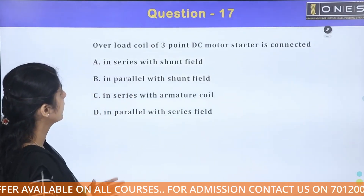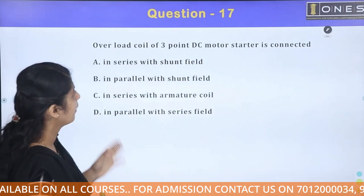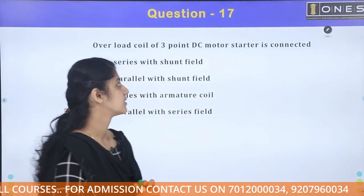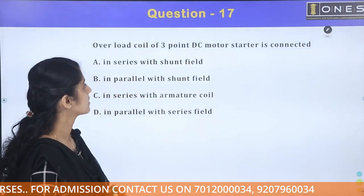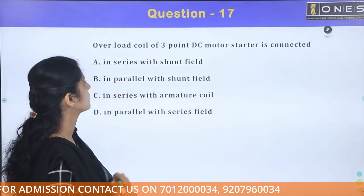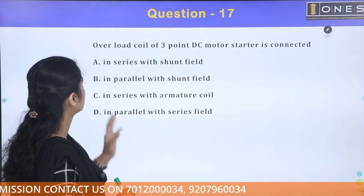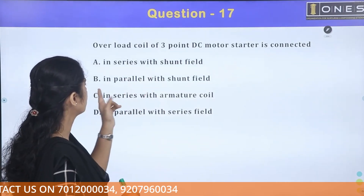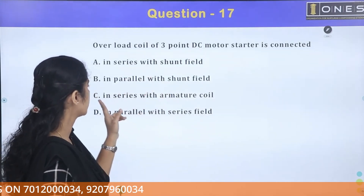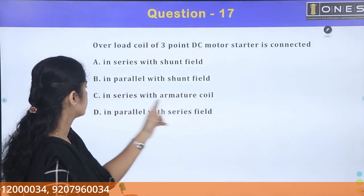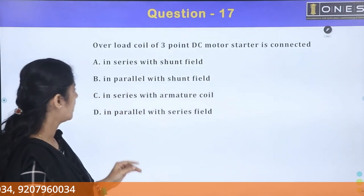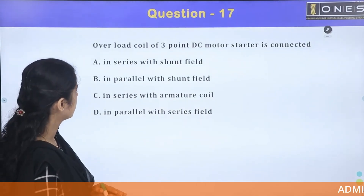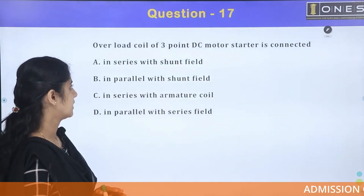The next question: the overload coil of a DC motor 3-point starter is connected — in series with the shunt field, parallel with the shunt field, in series with the armature coil, or in parallel with the series field?